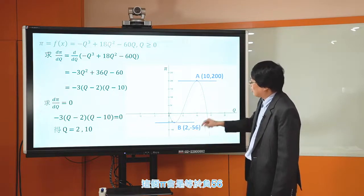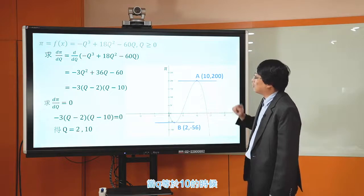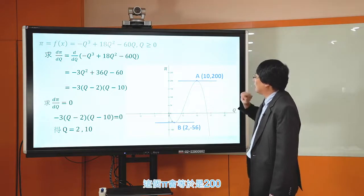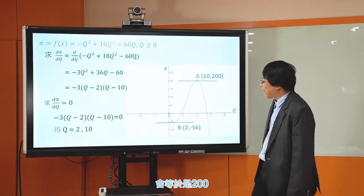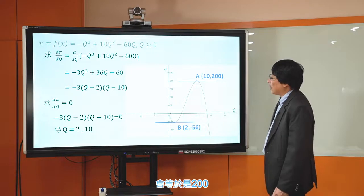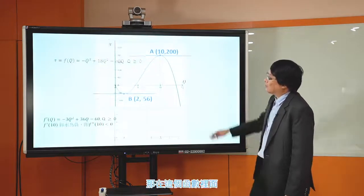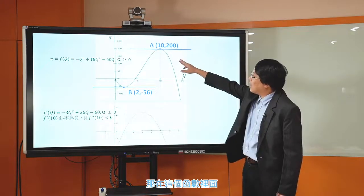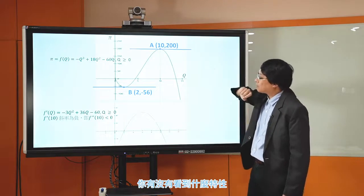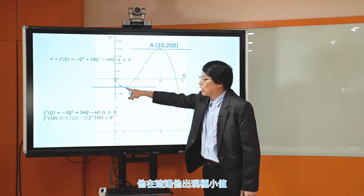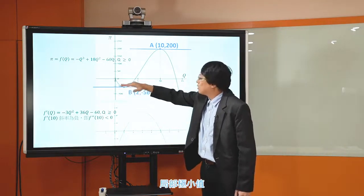把数字带进去：当q等于2的时候，π等于 -56；当q等于10的时候，π等于200。在这个函数里面，q等于2出现局部极小值，q等于10出现局部极大值，这两个点上面切线的斜率都等于0。